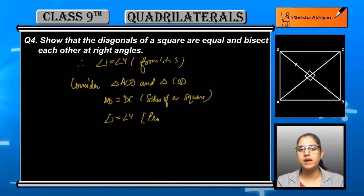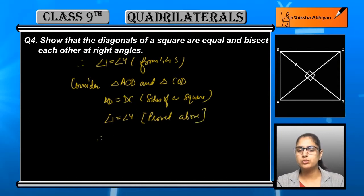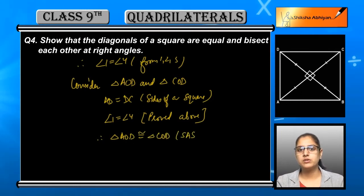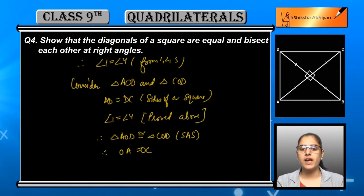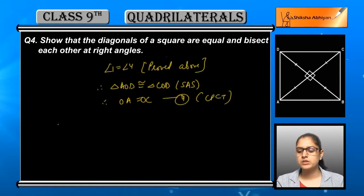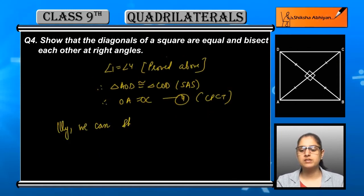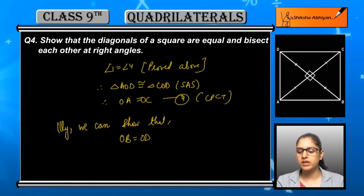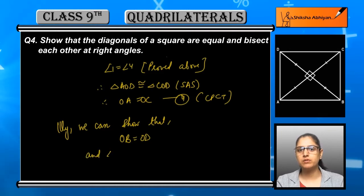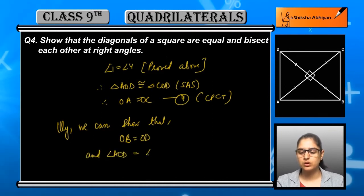Now we consider another two triangles: AOD and COD. Looking at the figure, AD is equal to DC since a square is given. Angle 1 is equal to angle 4, which we can prove. With AD equal to DC and angle 1 equal to angle 4, and OD common, we can say that triangle AOD and triangle COD are congruent by SAS congruence rule.